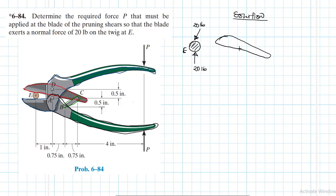The red member has a pin at D and a pin at C. At C, member BC is connected — and that is a two-force member, so we only expect one axial force along the direction BC. I can tell that BC is in compression, so I'll show the force accordingly.